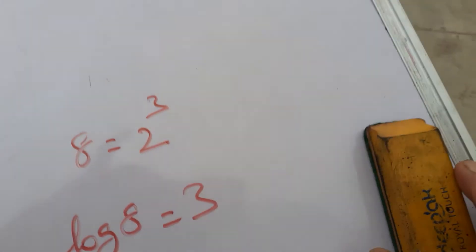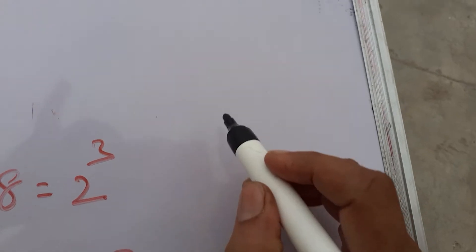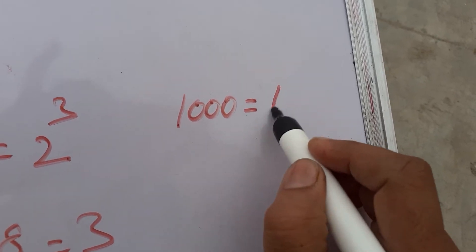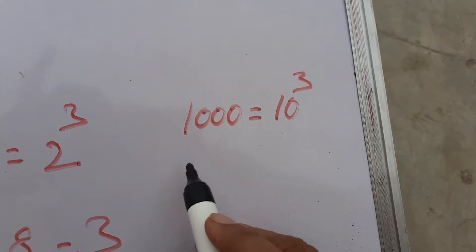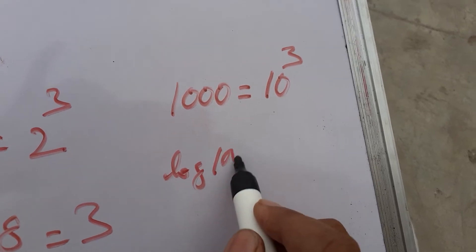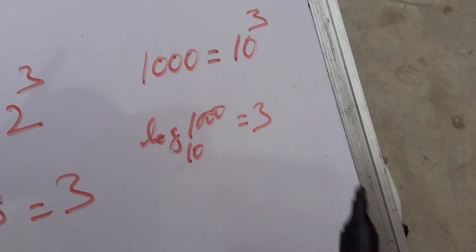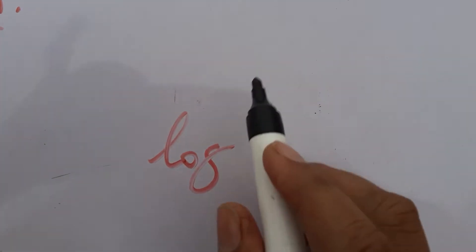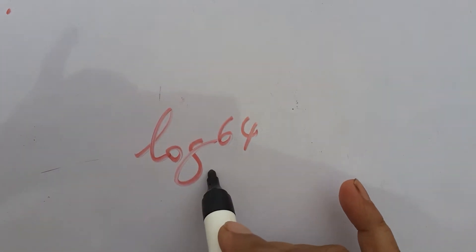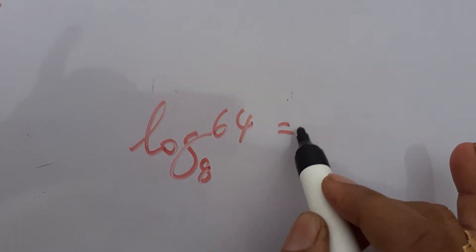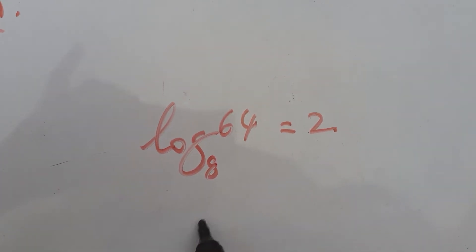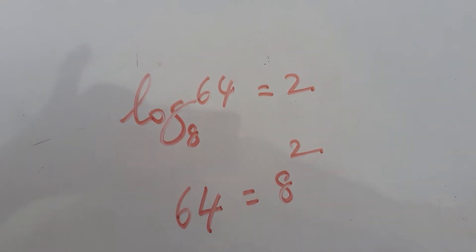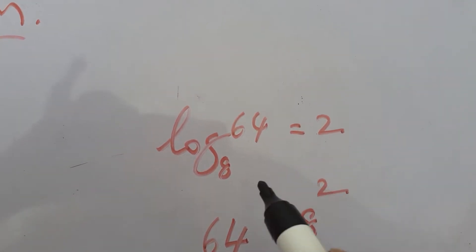And similarly, 1000 = 10³, so log 1000 base 10 is equal to 3. Like that you can write. For example, log 64 base 8 is 2. How can you write this? 64 = 8². Like that you can write in terms of logarithm.